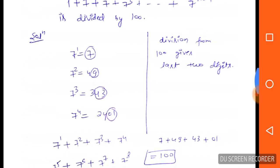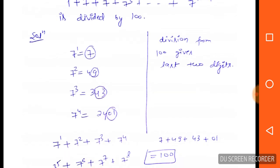Here we have a concept. 7¹ is 7, 7² is 49, 7³ is 343, 7⁴ is 2401.